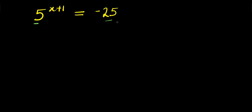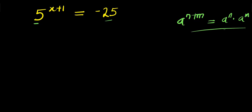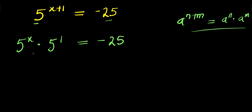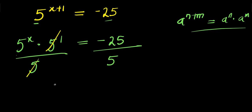So, let's consider this identity. If you have a power n plus m, this equals a power n times a power m. Applying this, we have 5 power x times 5 power 1 equals negative 25. So, if we want to isolate 5 power x, we divide both sides by 5. I have 5 power x equals negative 25 divided by 5, which is negative 5.